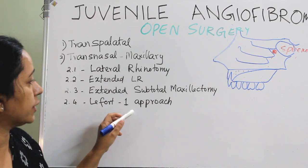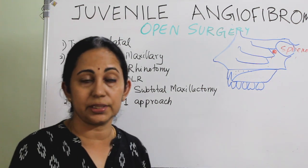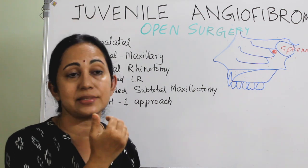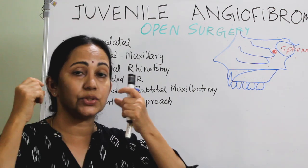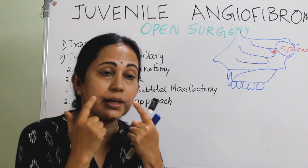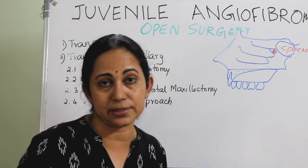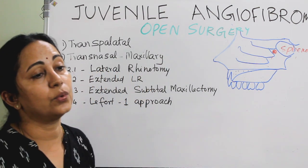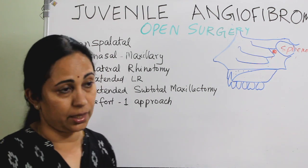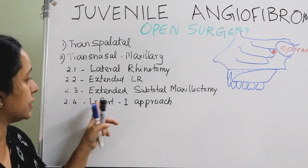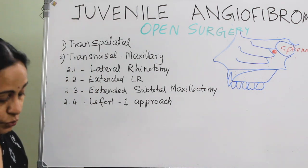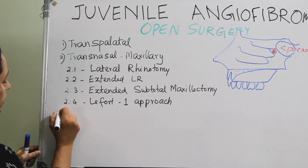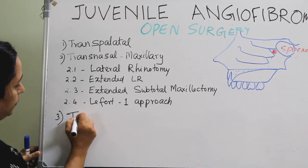An extended subtotal maxillectomy may also be needed. Another approach is the LeFort 1 approach, where the incision is in the gingivobuccal surface inside the oral cavity — between the upper two molars. This has the advantage of very good exposure without a visible scar.